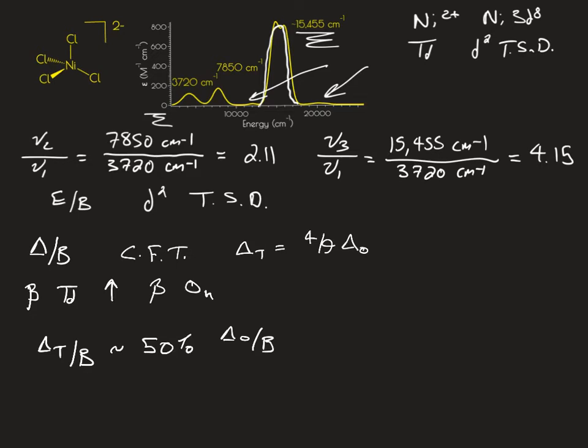If you remember from a previous video, we used the delta O over B equal to approximately 12. So our starting point is going to be a delta T over B equal to 6.